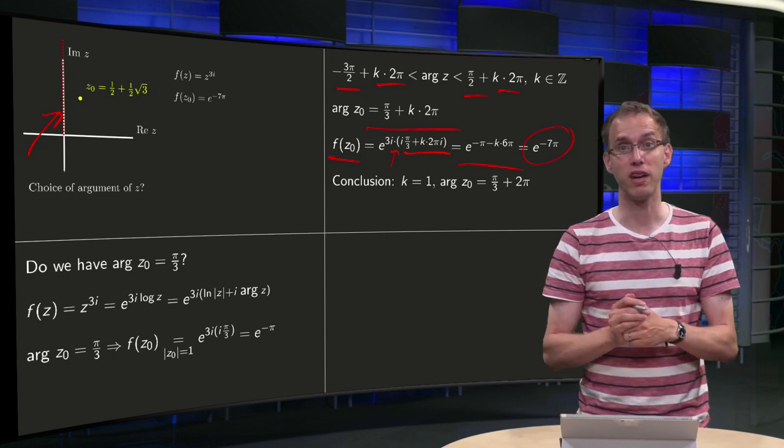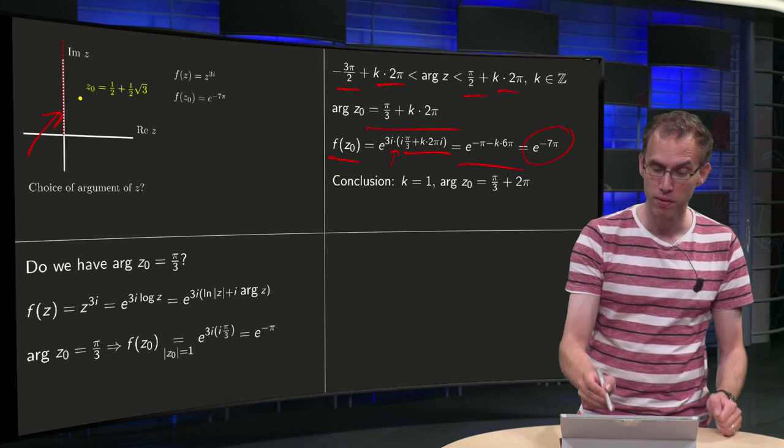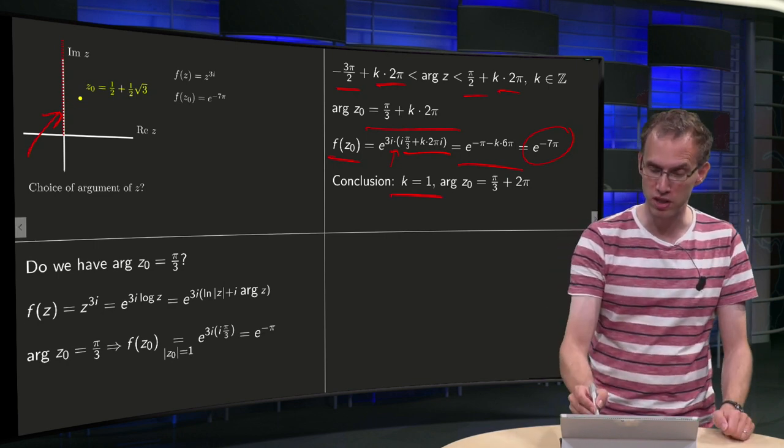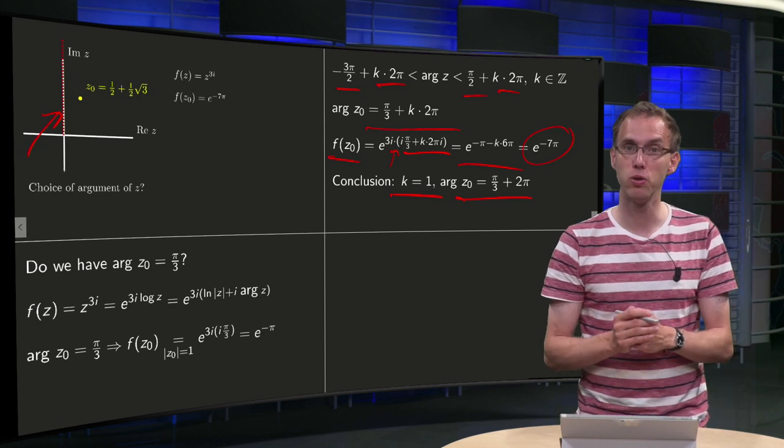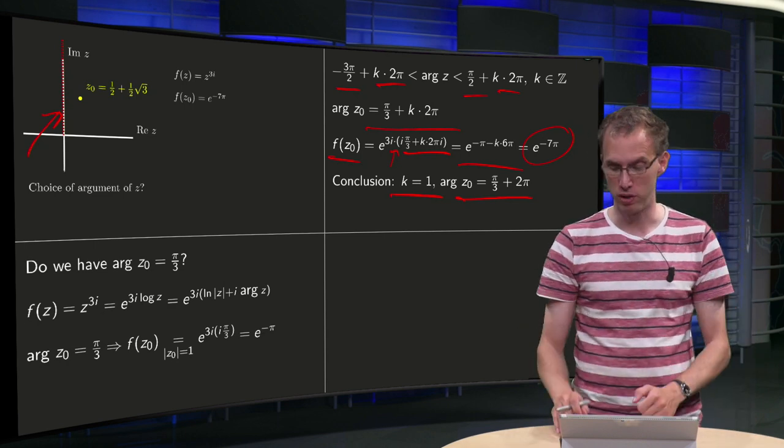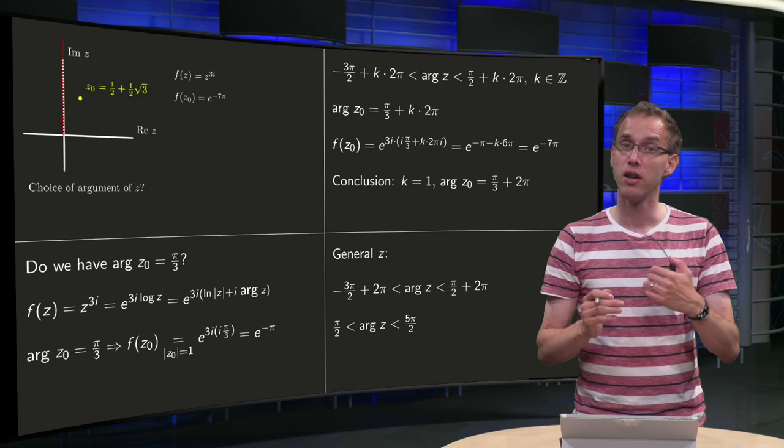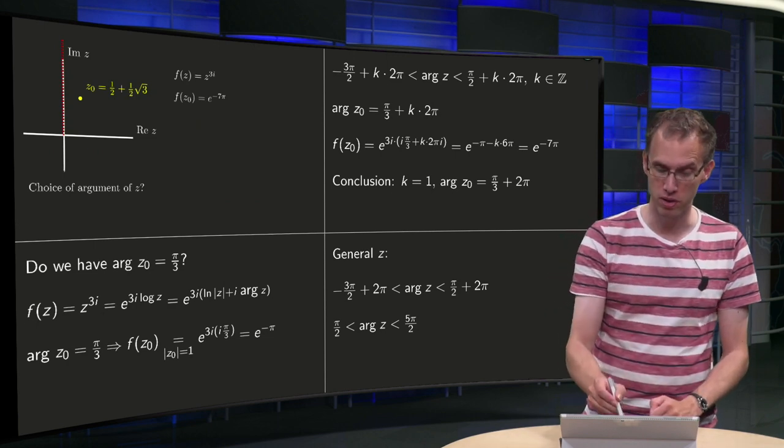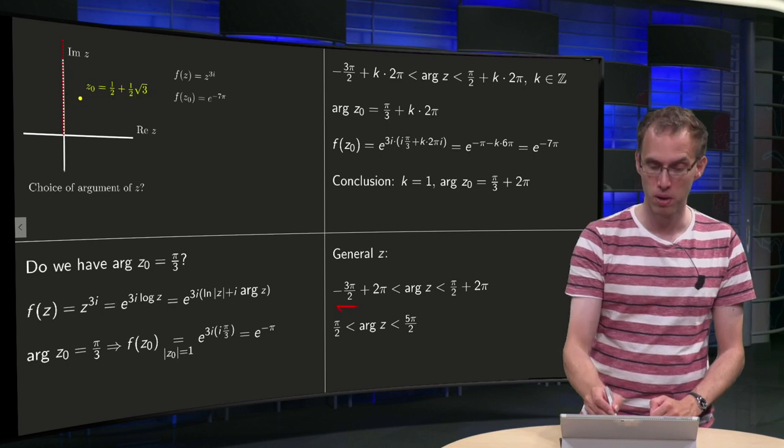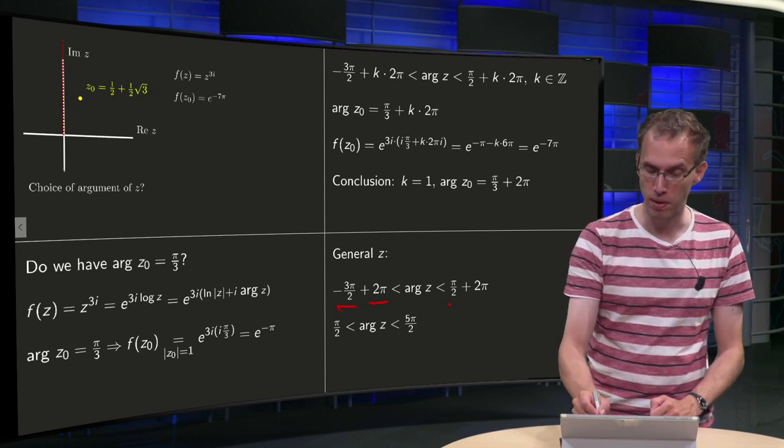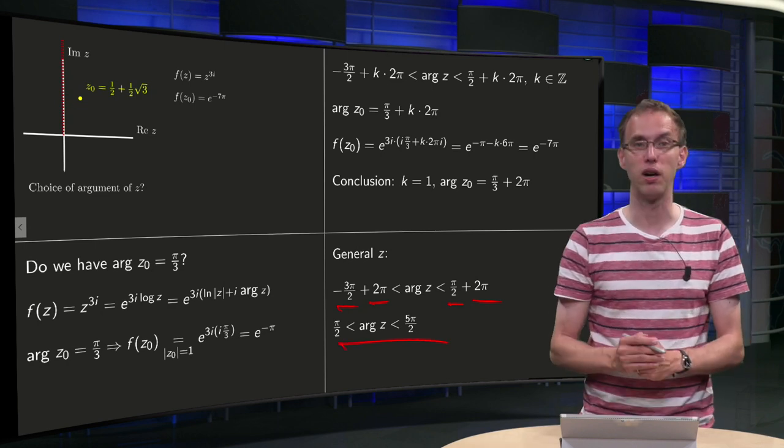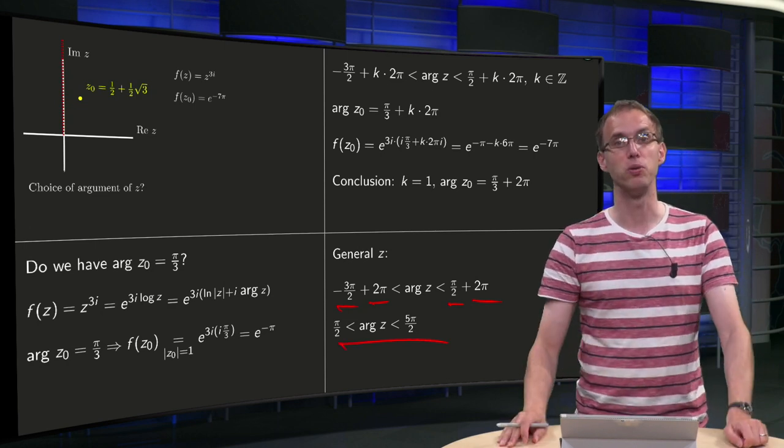So what value of k did we pick? Well, apparently we picked k equals 1 in this case. So that means our argument of z0 equals pi over 3 plus 2pi. So what did we do for general z? So for general z we also picked k equals 1. So our arguments are between minus 3pi over 2 plus 1 times 2pi and pi over 2 plus 1 times 2pi, or our arguments are between pi over 2 and 5pi over 2.